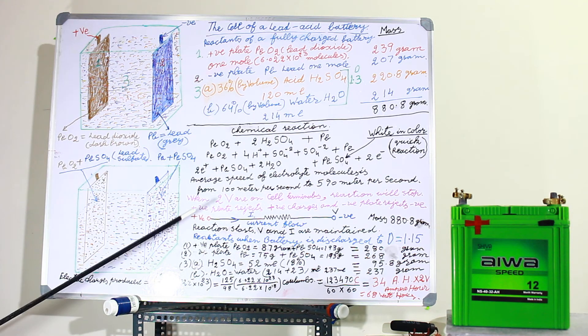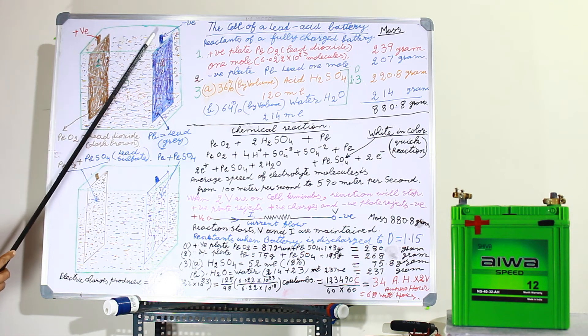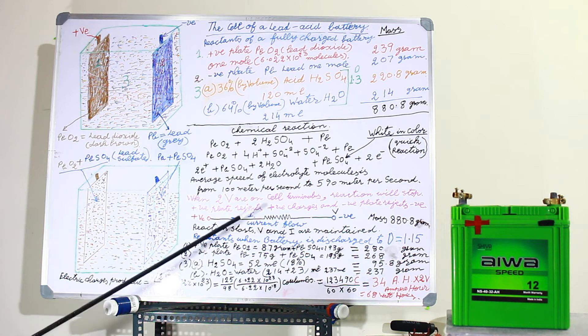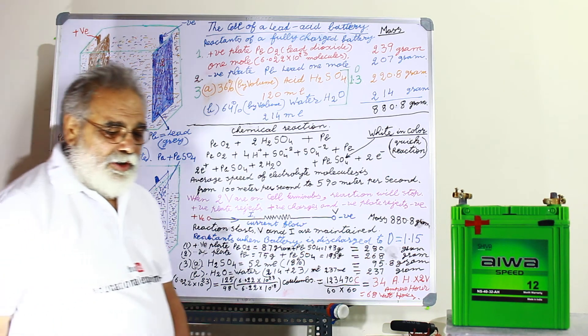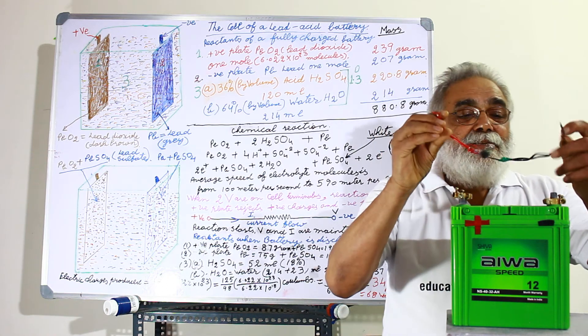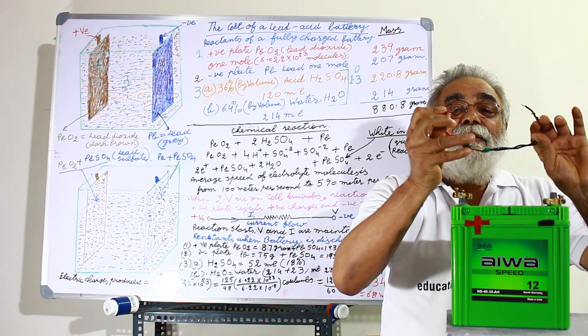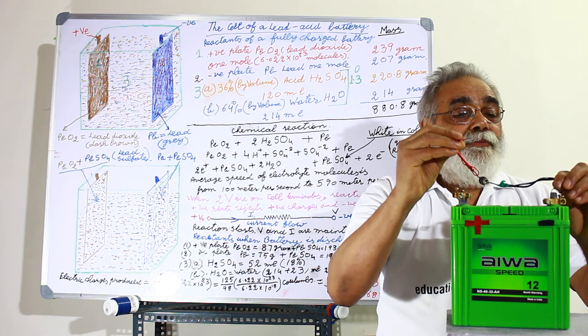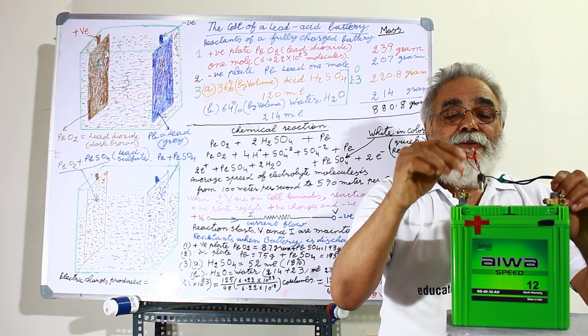But if we connect this positive terminal to this negative terminal through a circuit or a conductor, the current will flow. So let us see how does it happen. Here it is. This is the positive, this is negative, and here it is a circuit, a bulb of 3 watts. Now you can see this.